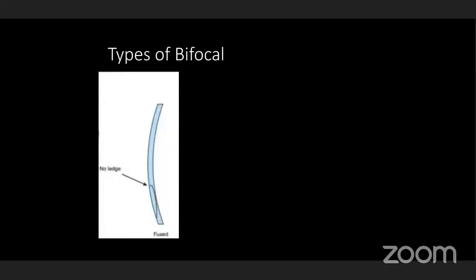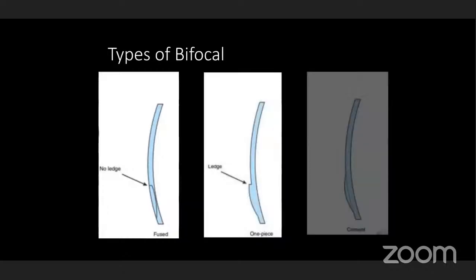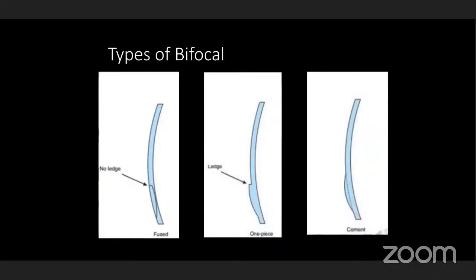Now coming to the types of bifocal — depending on the manufacturing procedures or techniques, they are divided into three types: the first is fused bifocal, the second is one-piece bifocal, and the third is cemented bifocal.